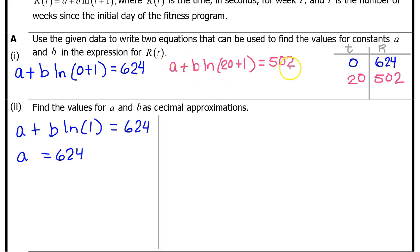Now let's bring down the red equation, substituting 624 in for A. So we have 624 + b ln(21) = 502. We have found the value of A, so all we have to do is find the value of b. Let's subtract 624 from both sides. b ln(21) = -122.